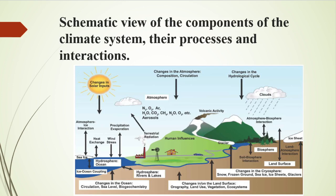Changes in the atmosphere — composition, circulation — and changes in the hydrological cycle and biosphere, and in the hydrosphere oceans, and changes in solar inputs are all key components shown.